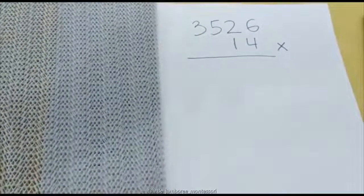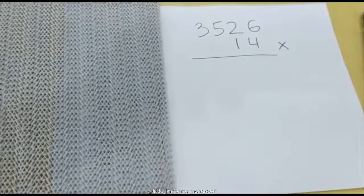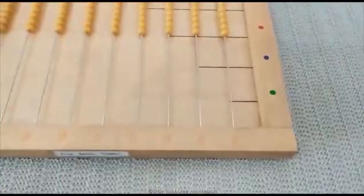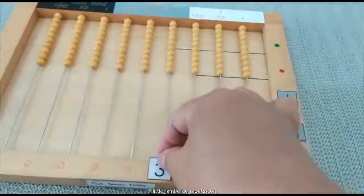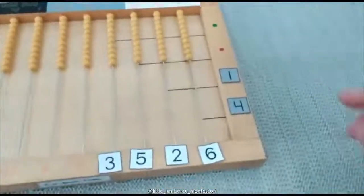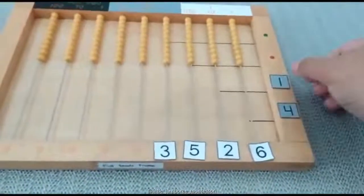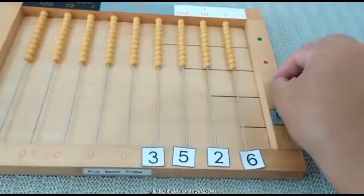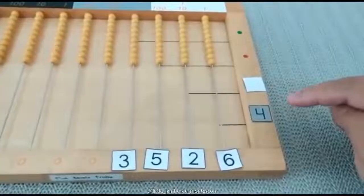There you are, 3526 times 14. Give me some time because there are two numbers for the multiplier: the unit and the tens. So we're going to cover the tens first, flip it over, because we're going to focus on doing the units first.